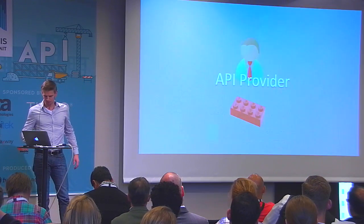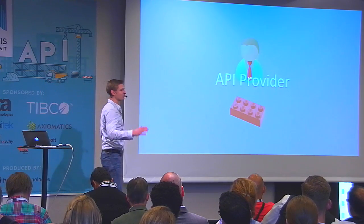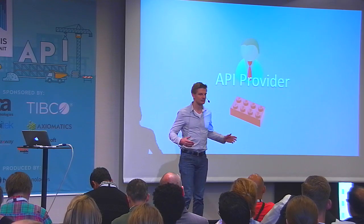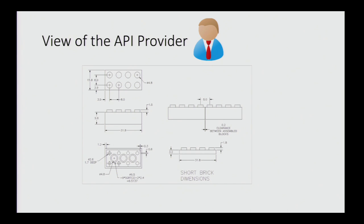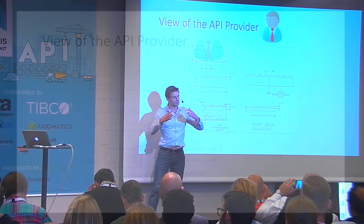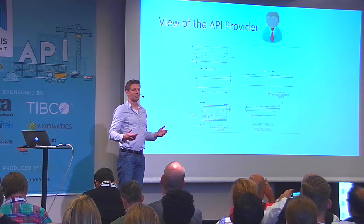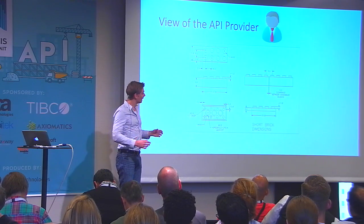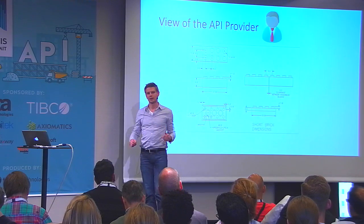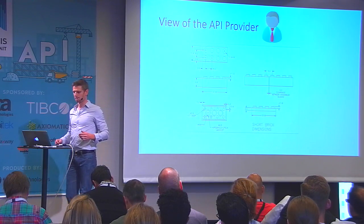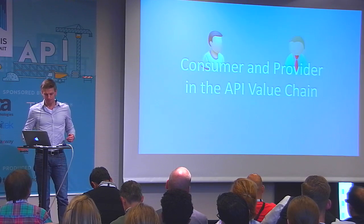But there is another view — the view of the API provider, the person who builds the API. Staying in the Lego analogy, that would be Lego the company. They think about how to build the interface — the exact specs on how the Lego brick has to look. Transferring back to APIs, that means our API descriptions and API documentation: we specify exactly how the API works, what the interface is like, and how to connect to existing back-end systems.